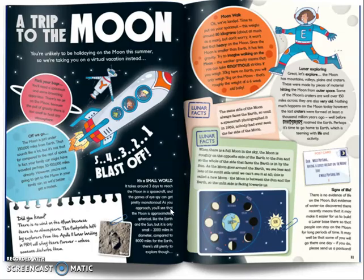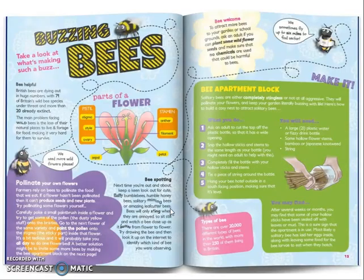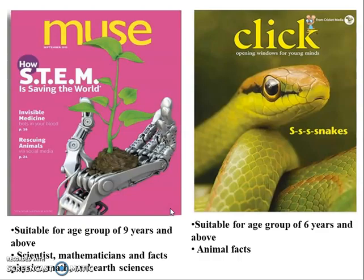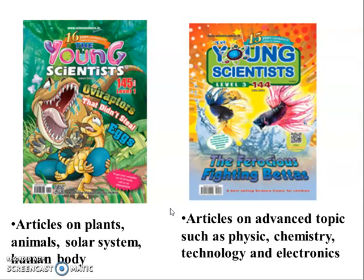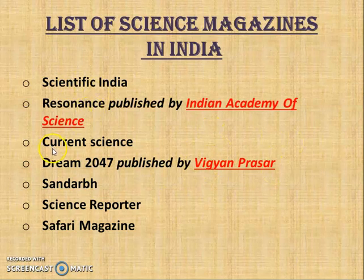This is how a magazine looks like — some examples. Now here is a list of science magazines in India: Scientific India, Resonance, Current Science, Dream, Very 47, Sundarb, Science Reporter, and Safari magazine, which are published by different agencies.